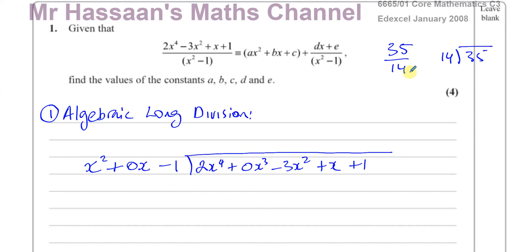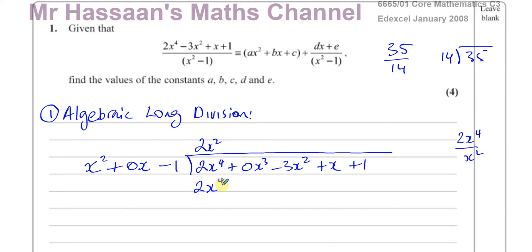Just like in normal long division, we ask how many times does x squared go into 2x to the power 4. Dividing gives us 2x squared, so it goes in 2x squared times. Now multiply 2x squared by all three terms of the divisor: 2x squared times x squared gives 2x to the power 4; 2x squared times 0x gives 0, so we write plus 0x cubed; and 2x squared times minus 1 gives minus 2x squared. These terms are written to keep everything in line for the subtraction step.